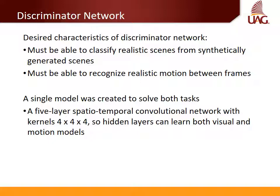The desired characteristics of the discriminator network are to be able to classify realistic scenes from synthetically generated scenes, and to recognize realistic motion between frames. A single model was created to solve both tasks: a five-layer spatiotemporal convolutional network with kernels 4x4x4, so that higher layers can learn both visual and motion models.